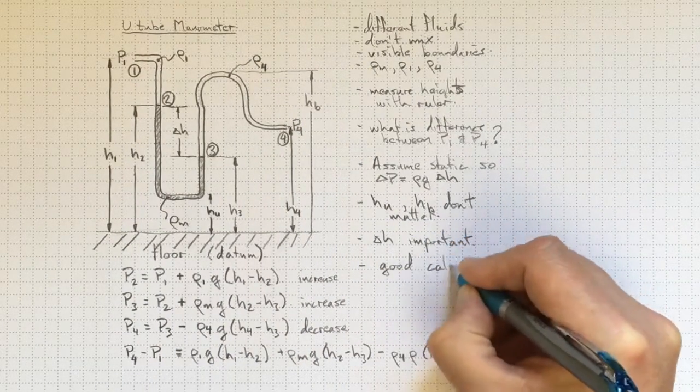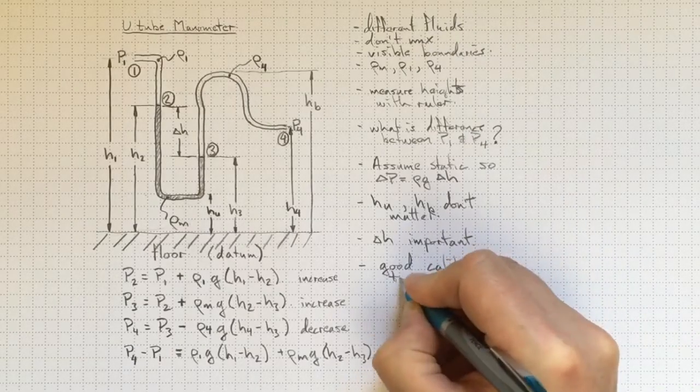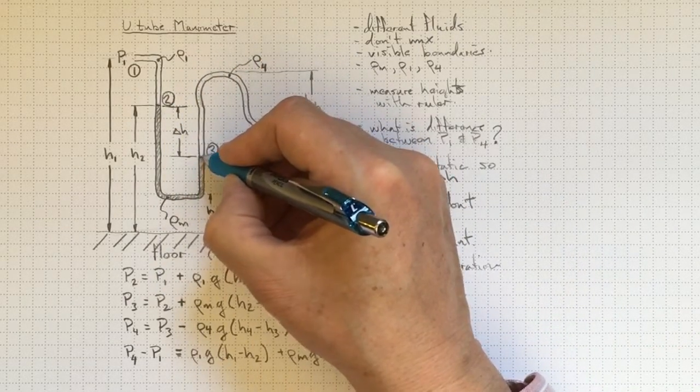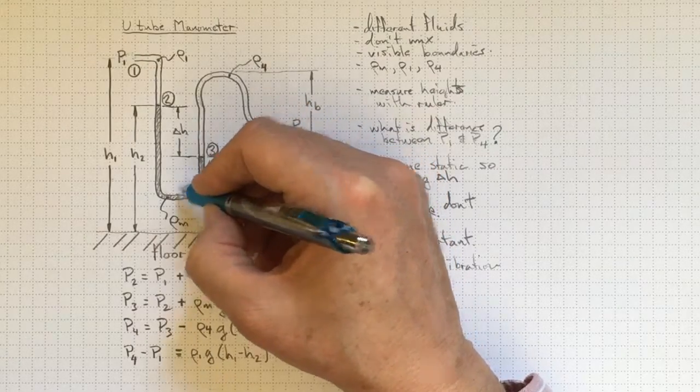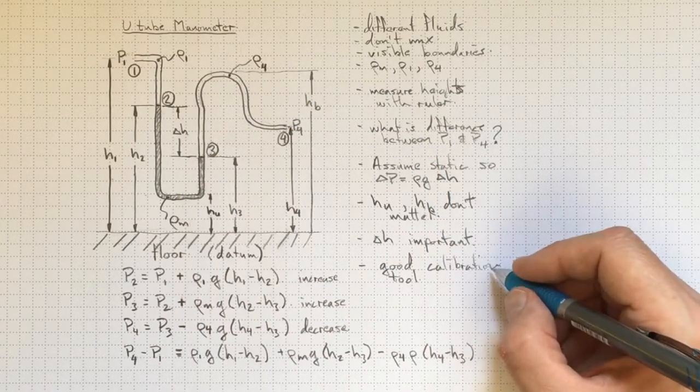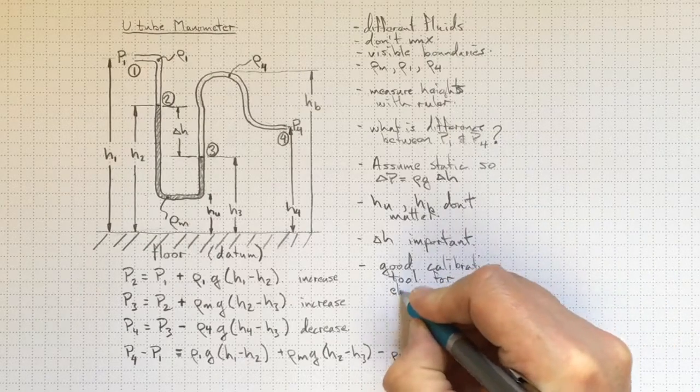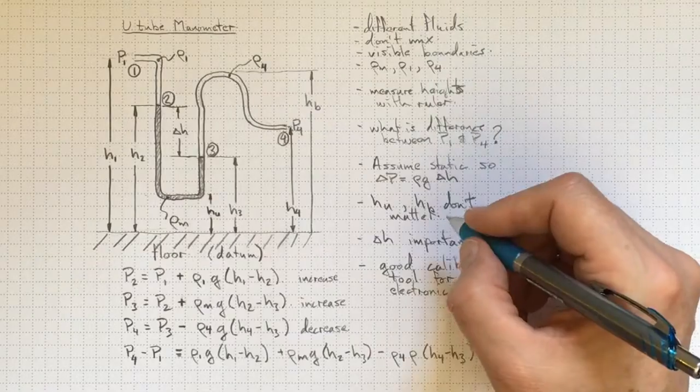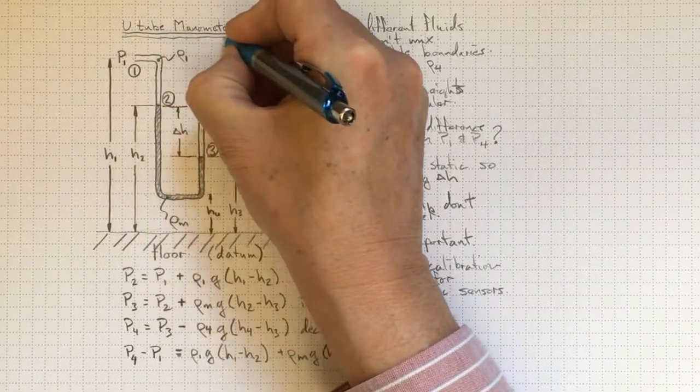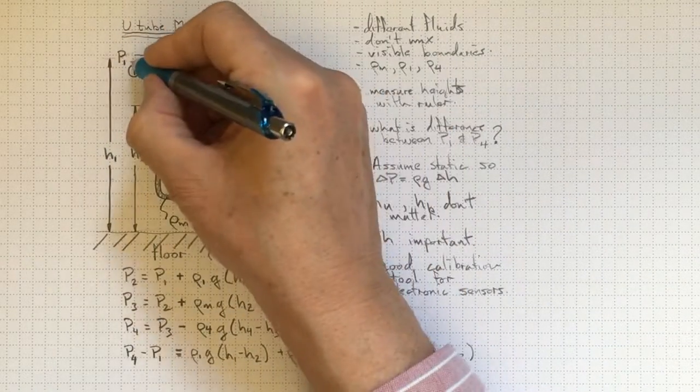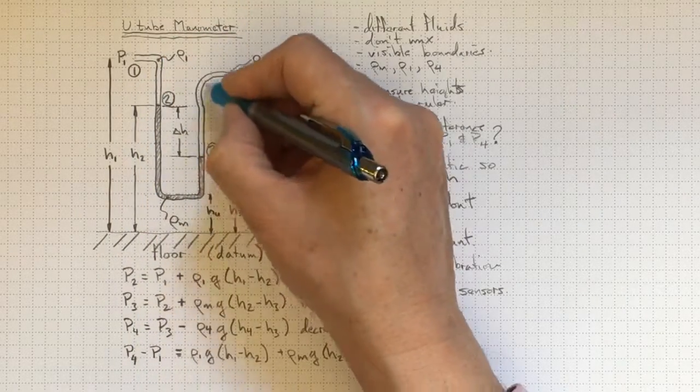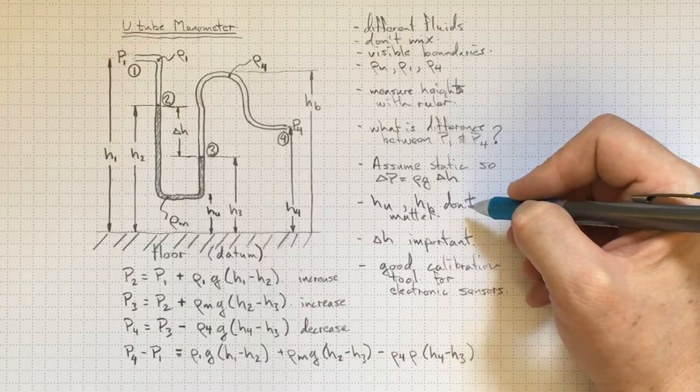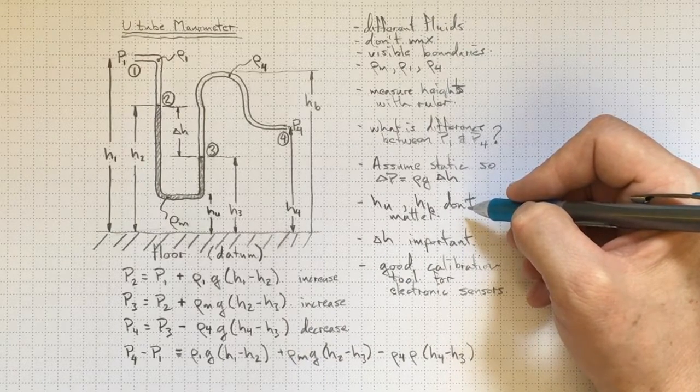This makes a good calibration tool because the difference of a couple of millimeters of liquid is a very small pressure difference, and we can use this to calibrate our electronic sensors. U-tube manometers give us a practical application where we can take what we know about fluid statics, following along a path through a fluid that isn't moving, to determine pressure differences and draw some useful conclusions for practical measurements.